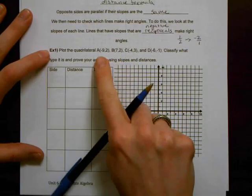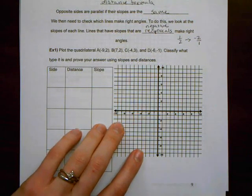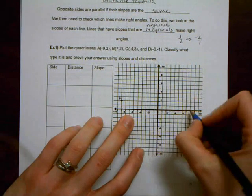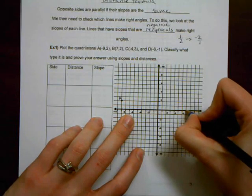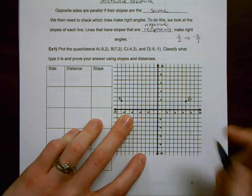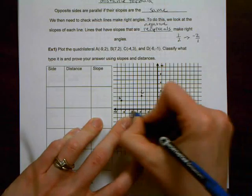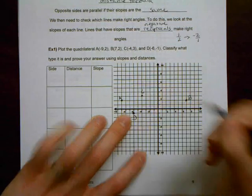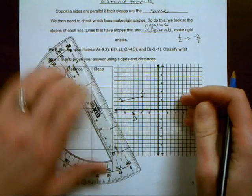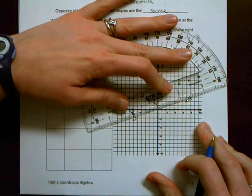For example one, you're going to first need to plot these four coordinates for this quadrilateral. I would recommend labeling those points as you plot them because it'll make it easier when we start referring back to line segments and things if you've got the labels there. So C is negative four, three, and D is negative six, negative one. Okay, I'm going to use my straight edge to connect it so that I can really see this quadrilateral here.